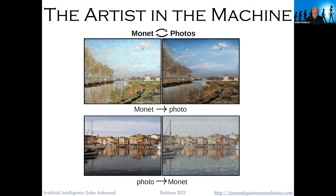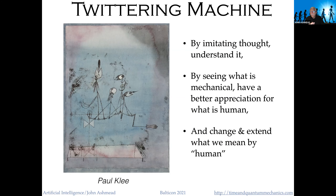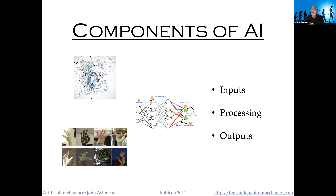This gets to one of the themes of the talk. One of my favorite pictures is Twittering Machine by Paul Klee — a cranked bunch of artificial birds giving artificial song — and that's a little bit like AI. It pretends to think, and by doing so it helps us understand what thinking is really about. What the AI does well and does poorly tells us a lot about how we ourselves think, and if we use AIs properly we may be able to extend and strengthen what we mean by human.